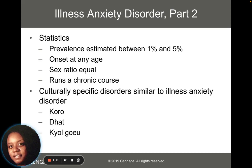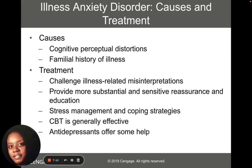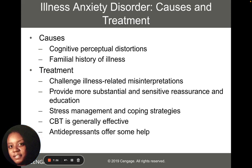There are also a few culturally specific disorders that relate to illness anxiety disorder. When thinking about causes, we have to consider thoughts and cognition and how distorted perceptions could impact expression of symptoms, as well as family history of illness. Treatment again includes CBT, which is generally effective, and antidepressants can also help, along with lots of psychoeducation and challenging those irrational beliefs and misconceptions about symptoms.